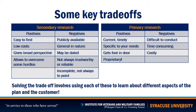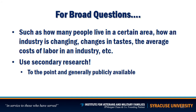Solving the trade-off involves using each type to learn about different aspects of the plan and the customer. Not every business needs to do primary research, but I highly recommend that all of you do. For broad questions — such as how many people live in a certain area, how the industry is changing, changes in tastes, or average cost of labor — use secondary research data, which is generally publicly available.